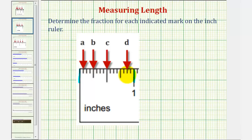So if we start with the smallest piece, notice how we have one, two, three, four, five, six, seven, eight, nine, ten, eleven, twelve, thirteen, fourteen, fifteen, sixteen equal partitions in one inch, and therefore A would be one-sixteenth.